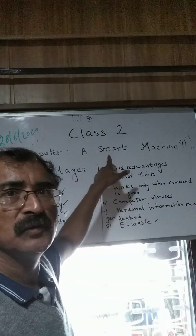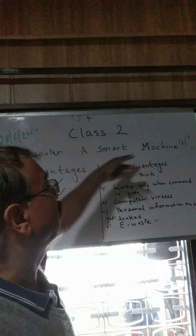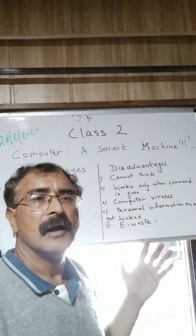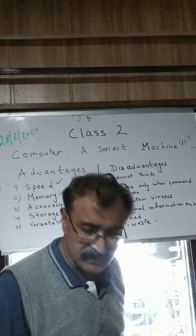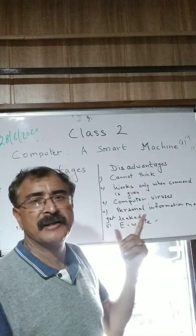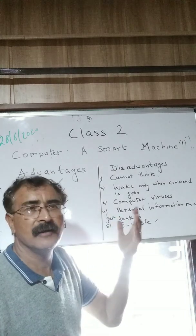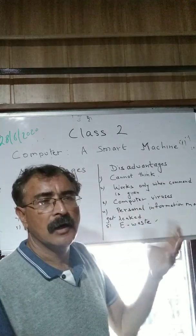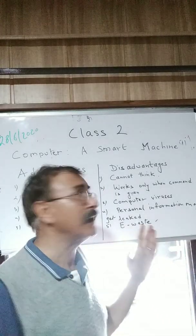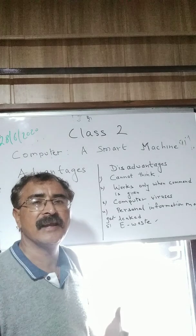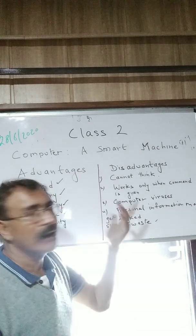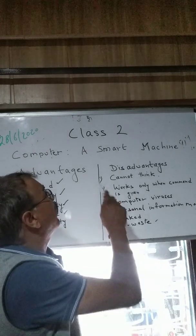This lesson is for Class 2. The chapter's name is 'Computer - A Smart Machine,' which is the first chapter. A computer is an electronic device. It is called electronic because it runs on electricity. Simply put, a computer is an electronic device which works very fast and makes work easy.